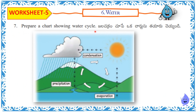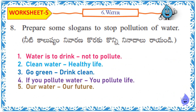Prepare a chart showing the water cycle. This is a chart showing the water cycle. Prepare some slogans to stop pollution of water: Water is to drink, not to pollute. Clean water, healthy life. Go green, drink clean. If you pollute water, you pollute life. Our water, our future.